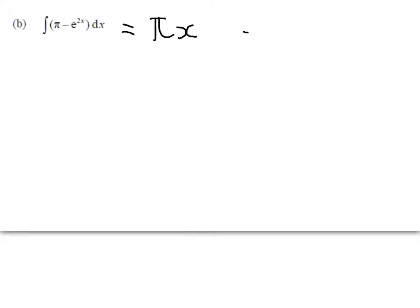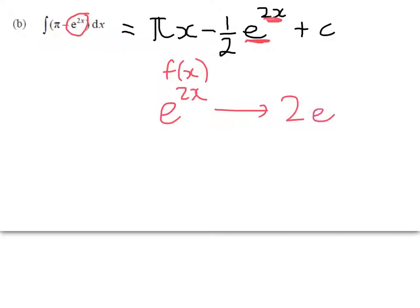And then e to the power of 2x, well, I want that to end up as minus e to the 2x. So it's going to be minus 1 half e to the 2x plus c. So let's just take a look at why that's happening. When I anti-differentiate e, I get e to the same power, but we've got to think about the reverse chain rule. So if I differentiate e to the 2x, then I'll get 2e to the 2x, but I don't want 2e to the 2x. I want minus 1 of them, so that's why that ends up in there.